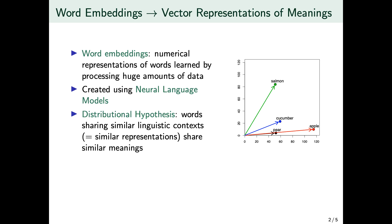Those are models that have a very complex structure with a lot of hidden layers and a lot of complex relations between those layers, that manage to learn and extract from text patterns that can be then used to represent a specific meaning.